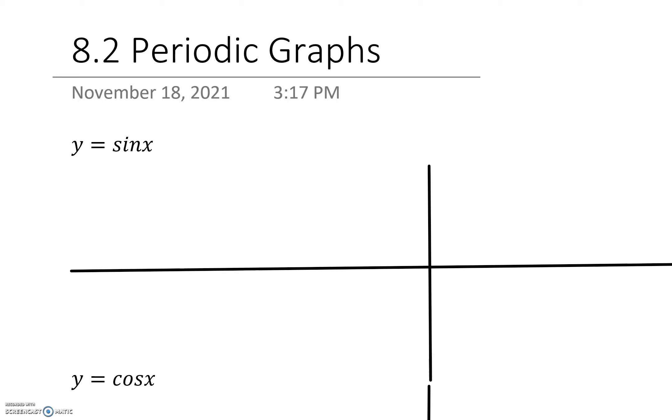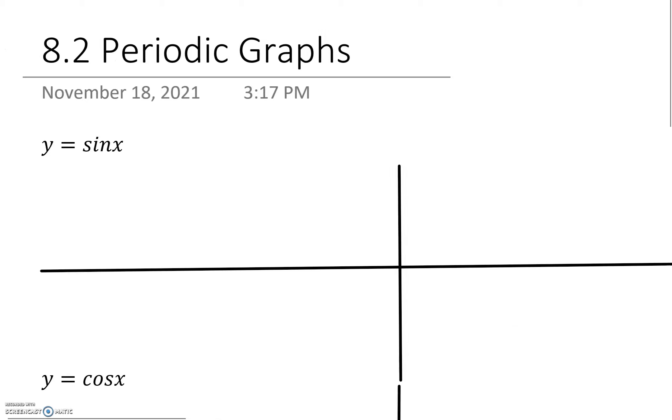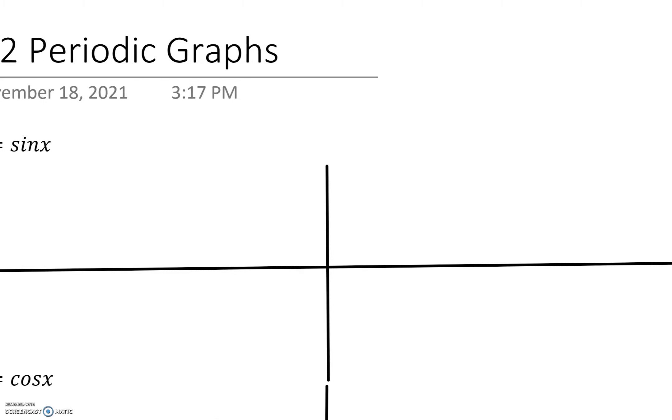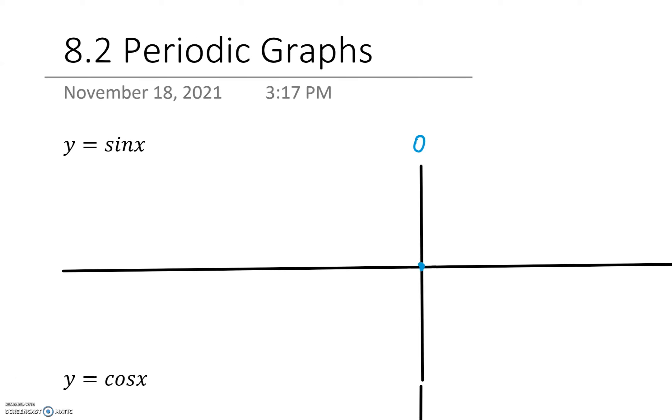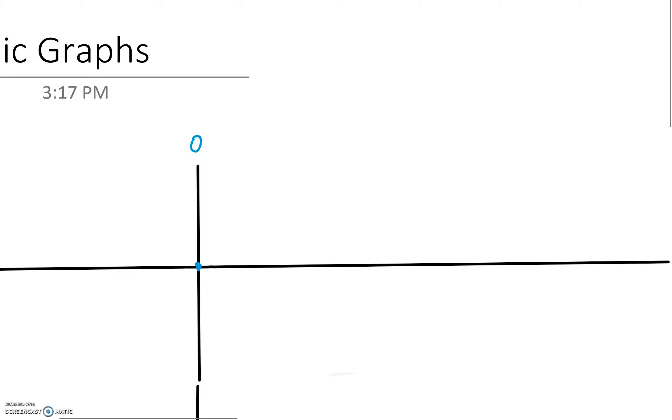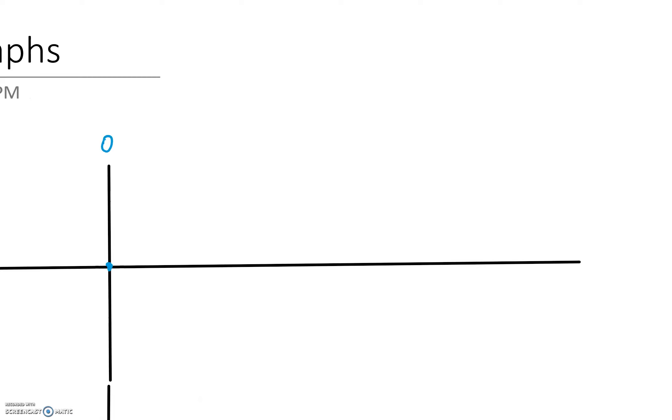To start off, a sine function is at the zero point, if you think about the x-axis here, the zero point. It is at zero. It also reaches zero at the 180 degree point, which I'm going to try to put here, and the 360 degree point here.